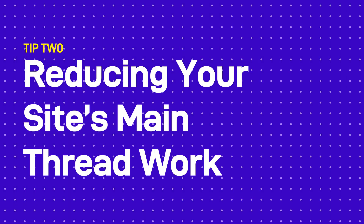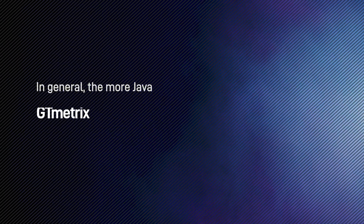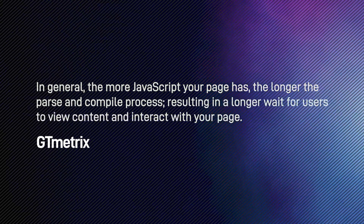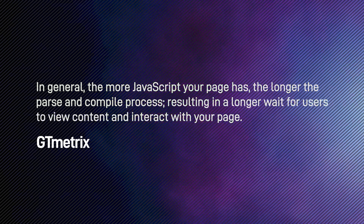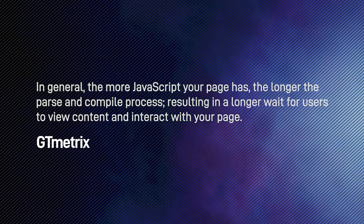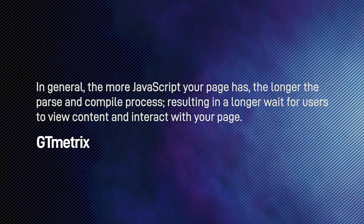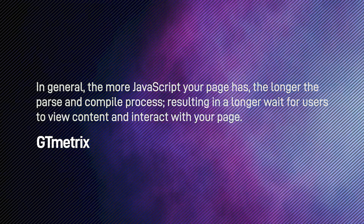Reducing Your Site's Main Thread Work: Like render blocking resources, you can bottleneck the performance of your site by loading different elements that take up a lot of processing power from your server. The simplest solution for this is to stop using so much JavaScript. As GTmetrix puts it: in general, the more JavaScript your page has, the longer the parse and compile process, resulting in a longer wait for users to view content and interact with your page.